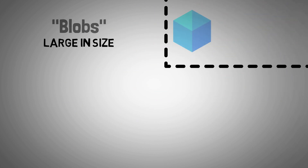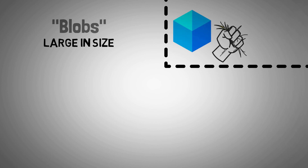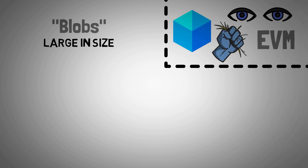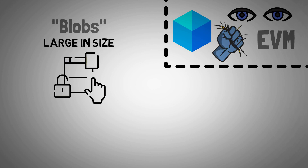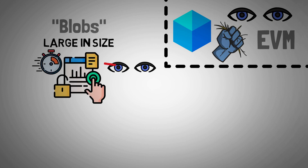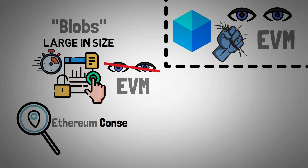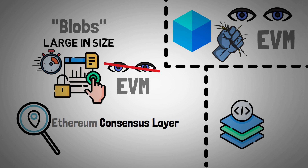Blobs are large in size, but in contrast to blocks, which are kept for all time and are visible to the Ethereum virtual machine, blobs are only accessible for a brief period of time and are invisible to the EVM. Blobs are also located on the Ethereum consensus layer rather than the computationally intensive execution layer.